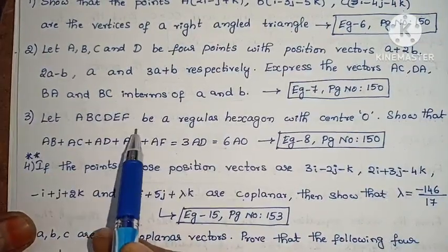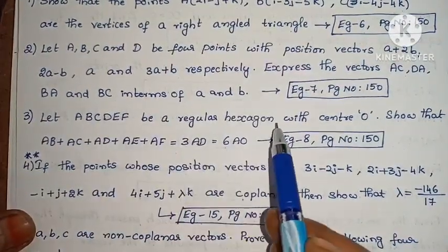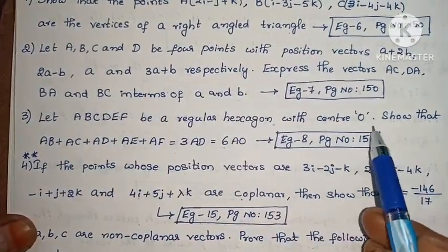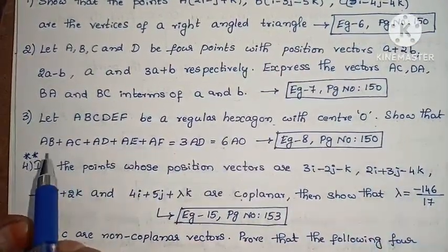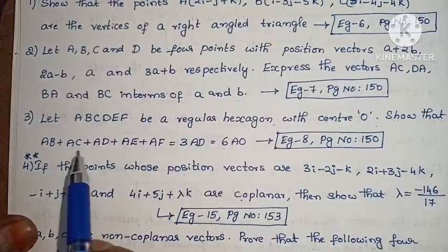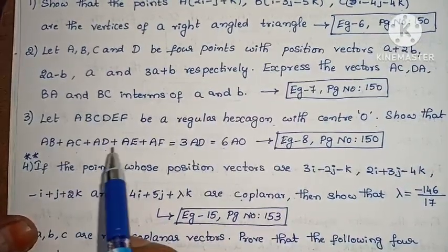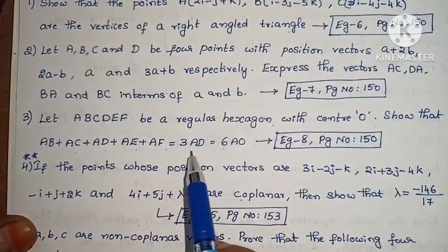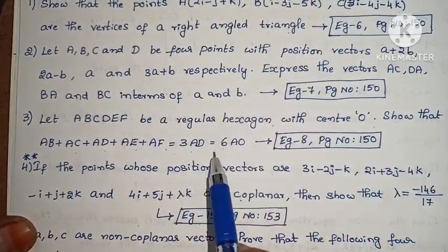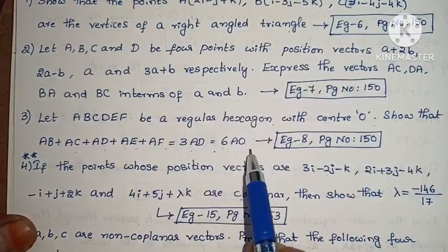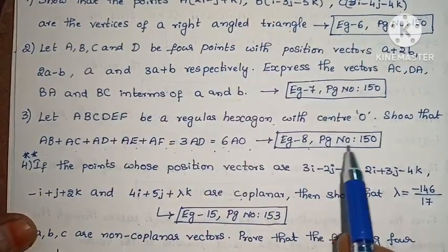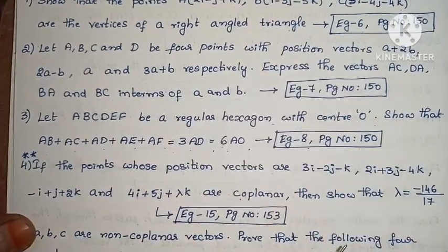Next: Let A, B, C, D, E, F be a regular hexagon with center O. Show that AB + AC + AD + AE + AF is equal to 3AD, which equals 6AO. Example 8, page number 150.